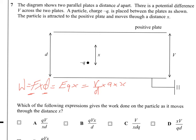So we've got V over D times Q times X. So we're looking for something that has Q, V and X on the top line and D on the bottom. And that's B.